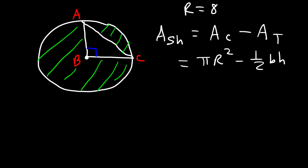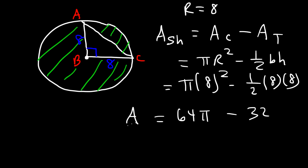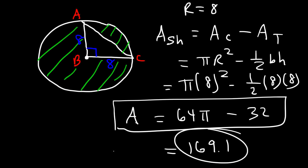Notice that AB is the radius and BC is also the radius, both equal to 8. The radius is also the base and height of the triangle. So the area is pi times 8 squared minus one half times 8 times 8: that's 64 pi minus 32. As a decimal, that's approximately 169.1 square units.